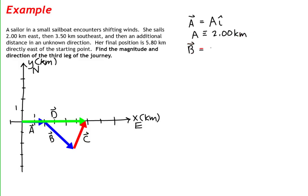B vector is equal to b sub x i-hat minus b sub y j-hat, representing the two components of vector b. The magnitude of vector b is 3.5 kilometers.